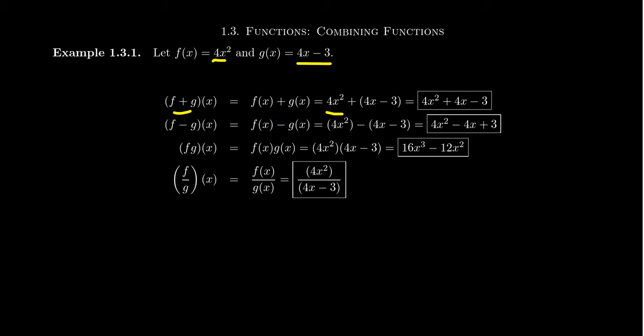When we add, we take 4x² plus 4x - 3. In a polynomial expression like this, we add together any like terms — we combine like terms. Now f and g don't actually have any common terms between them, so the sum is just going to be 4x² + 4x - 3.